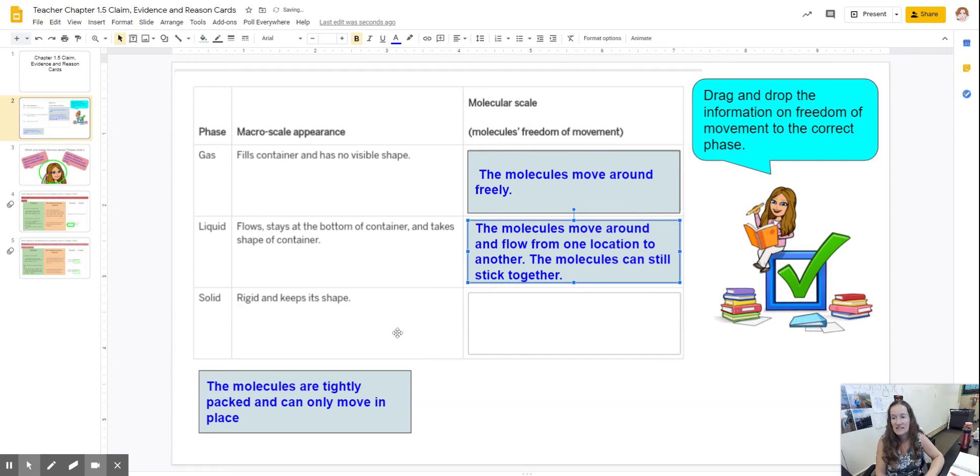And then finally, a solid is rigid and keeps its shape. In the simulation when you had a solid you could change the shape of the container but the object didn't change shapes. It's moving but it's very tight together.